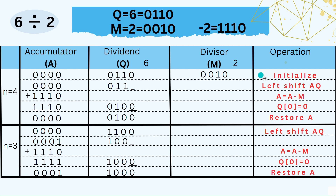For N = 4, the first step is left shift AQ. After left shift, A becomes 0000 and Q is 011 with an empty bit. Next, we perform A = A − M by adding the 2's complement of M, giving A = 1110. Since the MSB of A is 1, the step is unsuccessful. We set Q0 = 0 and restore A. At the end of N = 4, we have A = 0000 and Q = 0100.